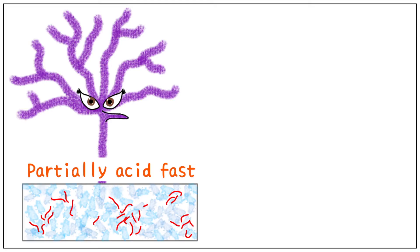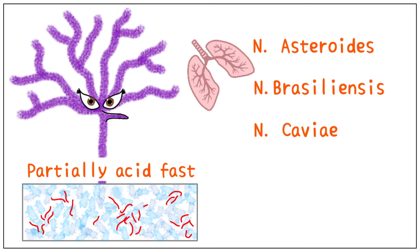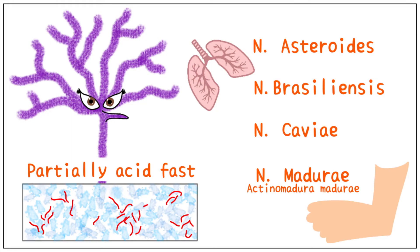Nocardia has four subspecies: A, B, C, and M. N. asteroides and N. brasiliensis are mainly responsible for lung infections. N. caviae is rarely seen. N. madurae, also called Actinomadura madurae, is responsible for the infection in Madura foot.